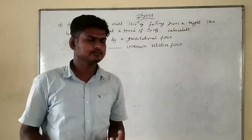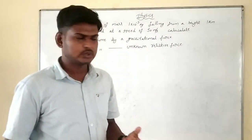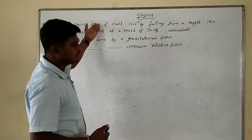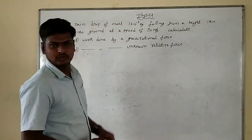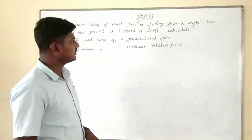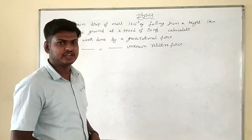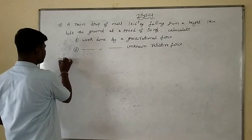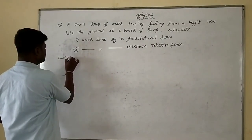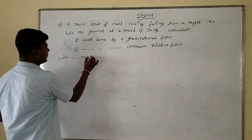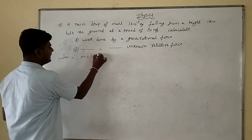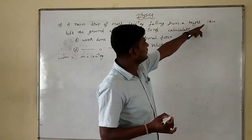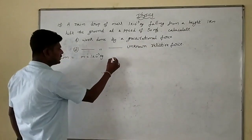Welcome to my channel. We can move to the next problem. A rain drop of mass 1×10⁻³ kg is given. Mass given: 1×10⁻³ kg, falling from a height of 1 kilometer.